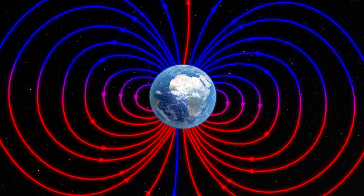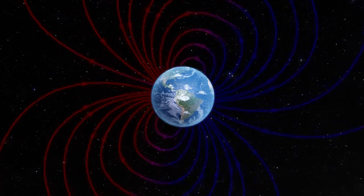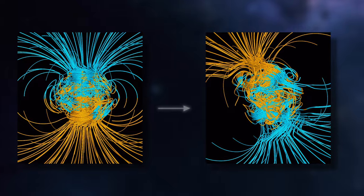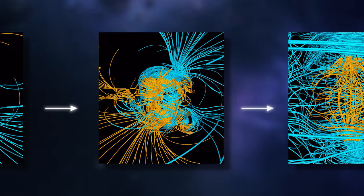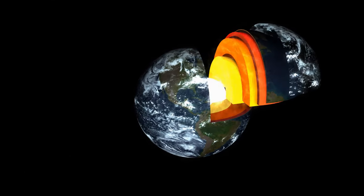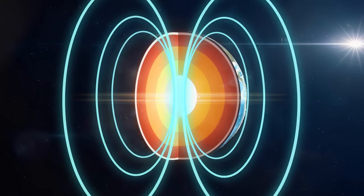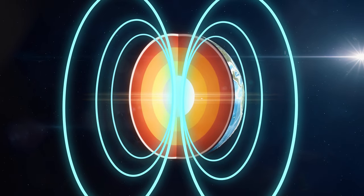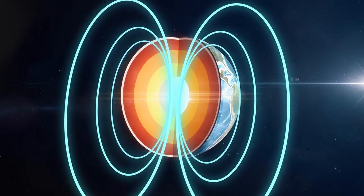Current scientific understanding suggests that these reversals begin with a weakening of the magnetic field. This weakening can disrupt the alignment of the force lines, making them unstable and chaotic. As the field is weakened, the influence of the Coriolis effect on the motion of the outer core decreases. This reduction in influence allows the magnetic field lines to realign in the opposite orientation, effectively reversing the poles.